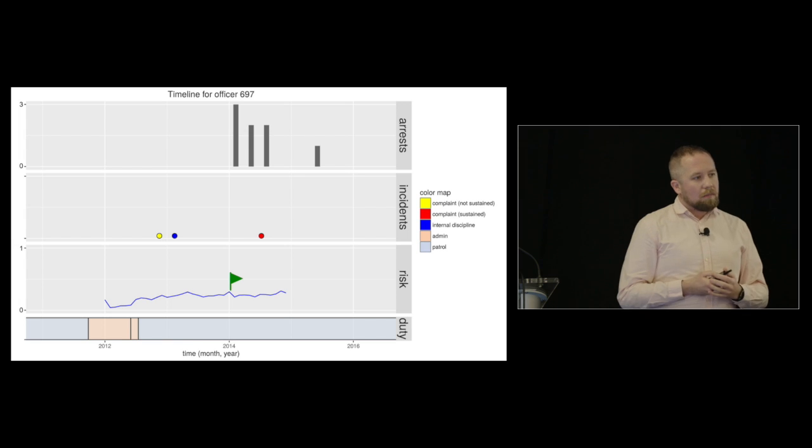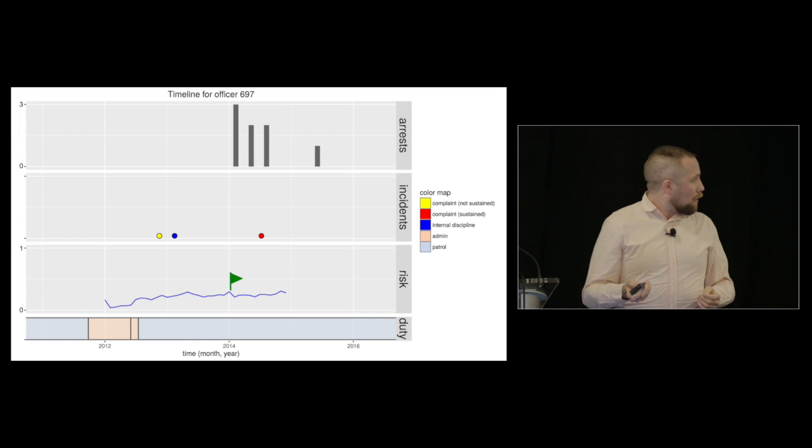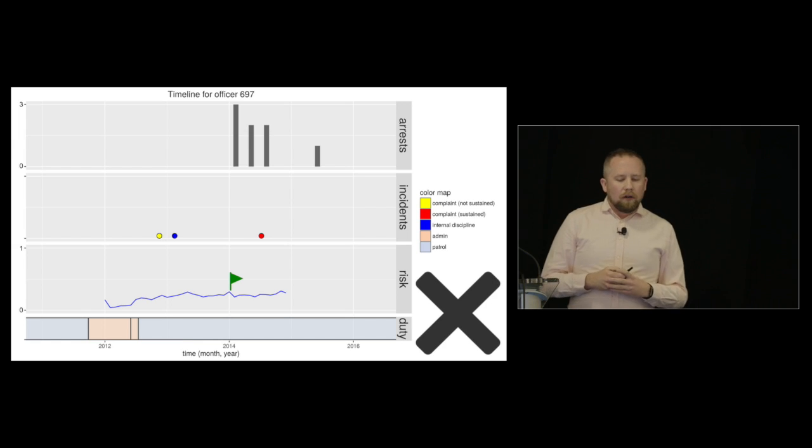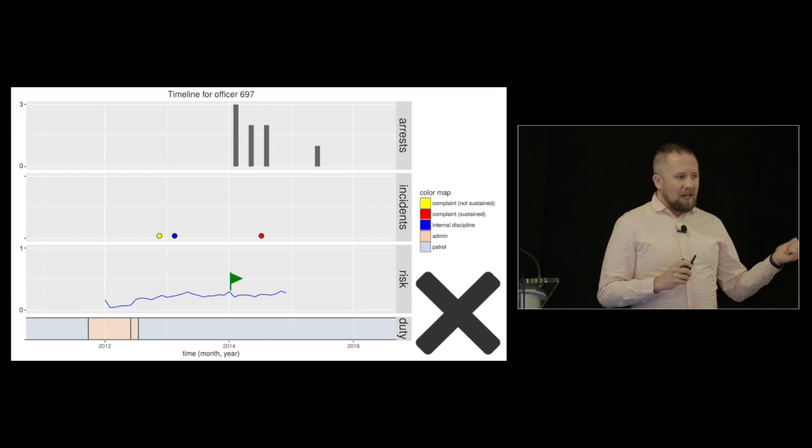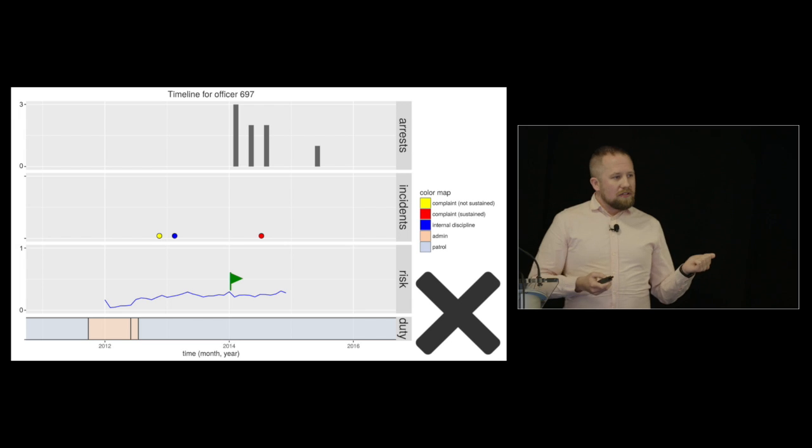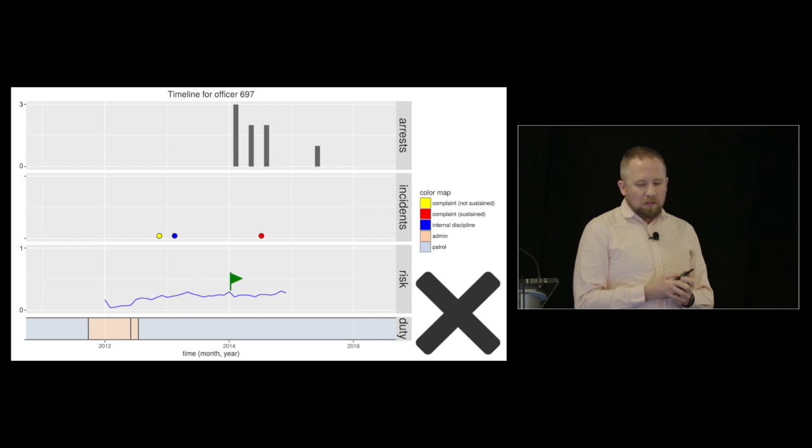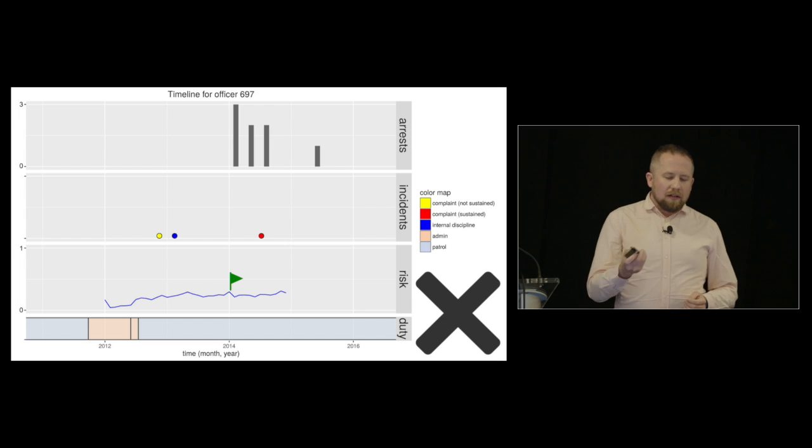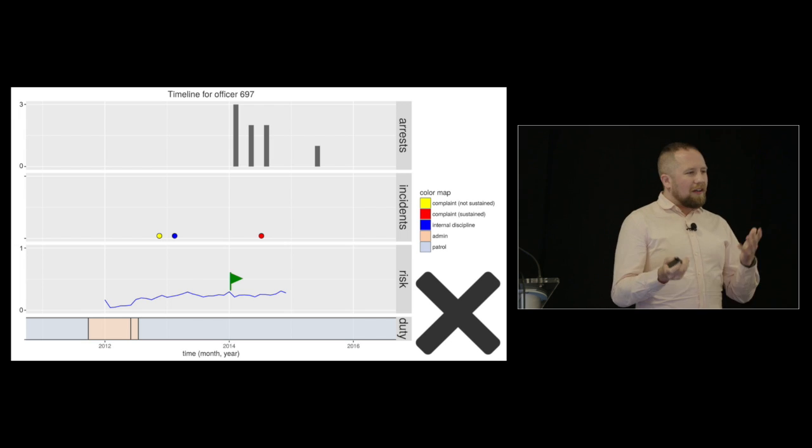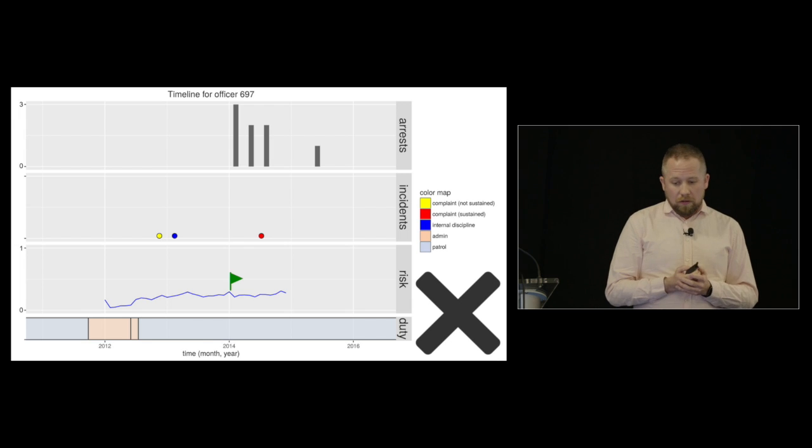But in the next year, there was a complaint that was sustained. When we talked to our partner, so this is an example where our model got this one wrong. But when we talked to our partner, we realized that this is one of these areas where we're just not looking at the right types of data for this officer. They were a school resource officer, so their arrests are very low, which makes a lot of sense. You don't arrest that many people in schools. But they said that this is someone that they would like to flag because of that particular incident was definitely something they wished they could have caught earlier. And their supervisor felt like there were things in the past that we might have been able to add to the model. So there's definitely room for growth.